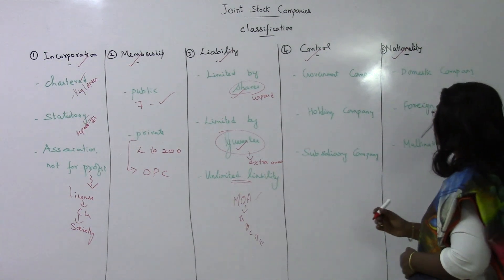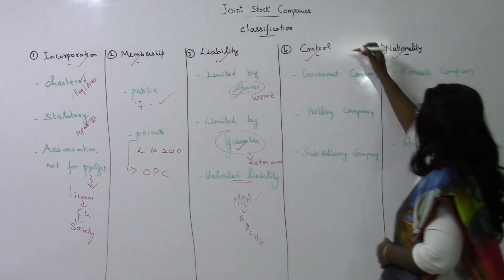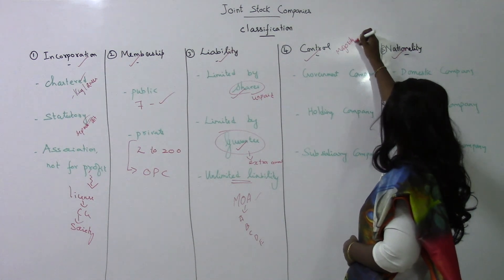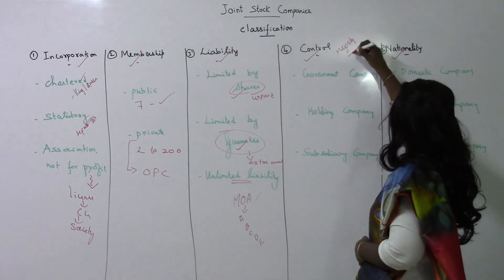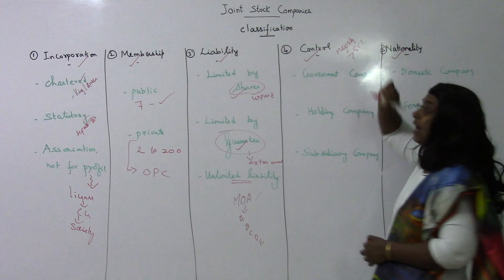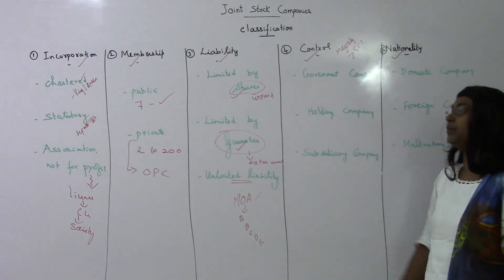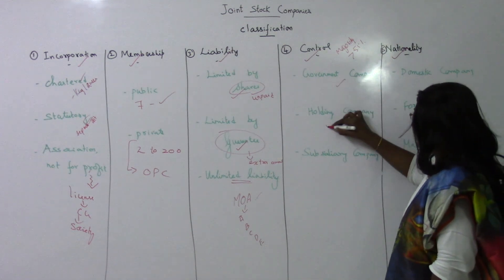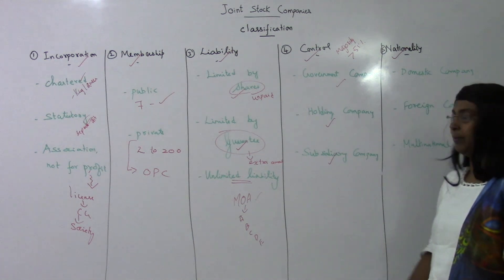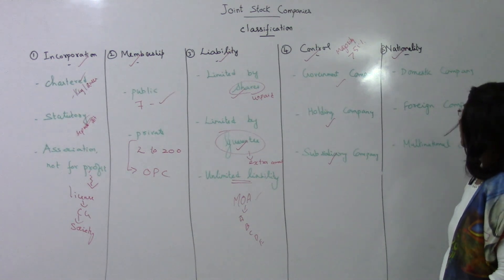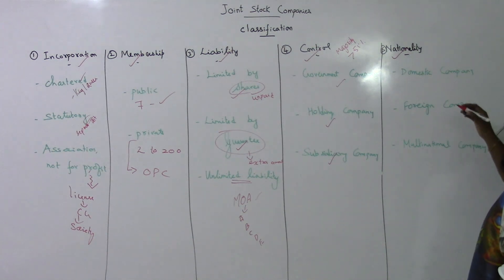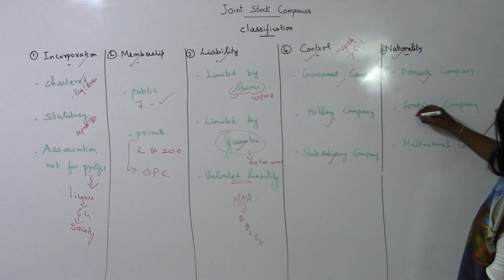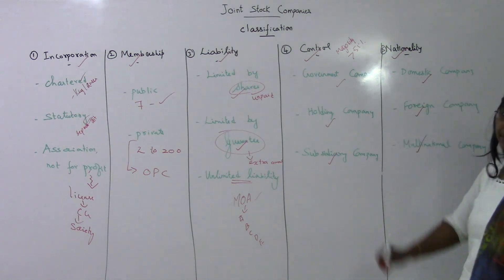With respect to control: who holds the majority of the shares — more than 51%, more than half — determines whether it is a government company, holding company, or subsidiary company. With respect to nationality: domestic company, foreign company, and multinational company.